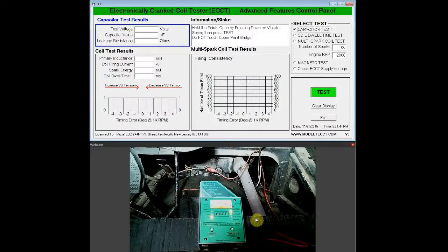This is a demonstration of the eCCT Magneto test function. Here we have an eCCT hooked up to a mag post using the red clip lead, and the black clip lead to the motor mount for a good engine ground.